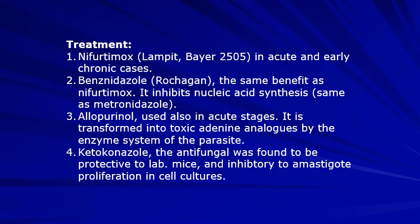Treatment: Nifurtimox, also called Lampit or Bayer 2502, is very beneficial in acute and early chronic cases. Benznidazole, or Rochagan from Roche Company, has the same benefit as Nifurtimox but inhibits nucleic acid synthesis, similar to metronidazole. Allopurinol was used also in acute stages, but it is transformed into toxic adenine analogues by the enzyme system of the parasite. Ketoconazole, as an antifungal, was found to be protective in laboratory mice and inhibitory to amastigote proliferation in cell cultures.